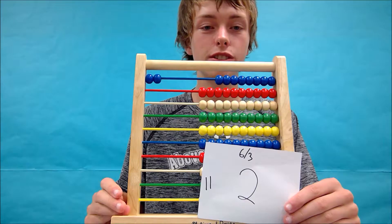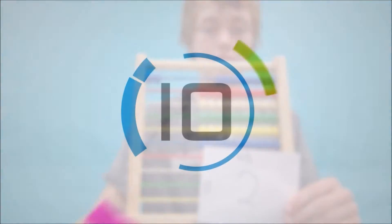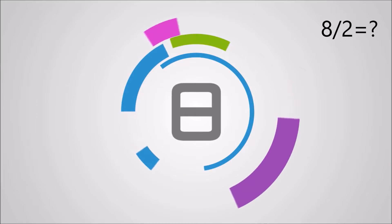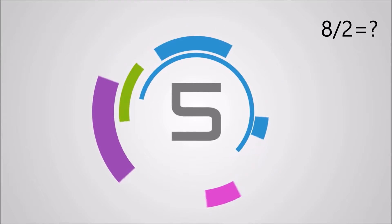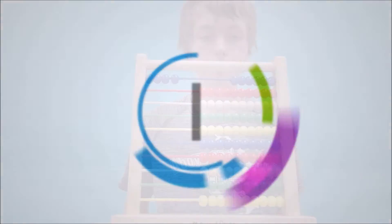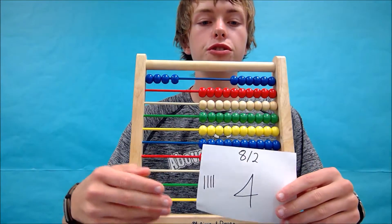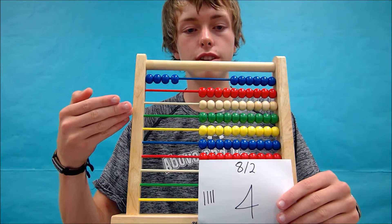Let's try one more. Let's do 8 divided by 2. Your answer should be 4. Whether you used your tallies or your abacus, it should be 4.